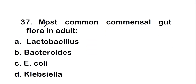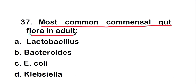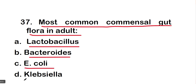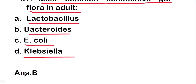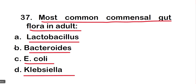Next question: the most common commensal gut flora in adults is Lactobacillus, Bacteroides, E. coli, or Clostridium. The right answer is option B — Bacteroides are the most common commensal bacterial flora present in the gut.